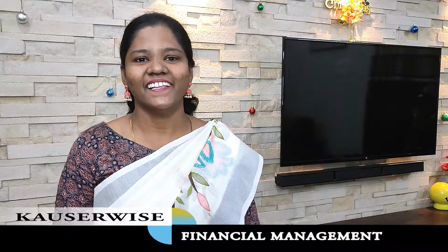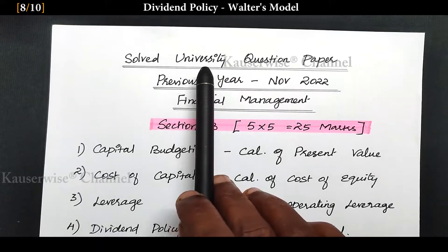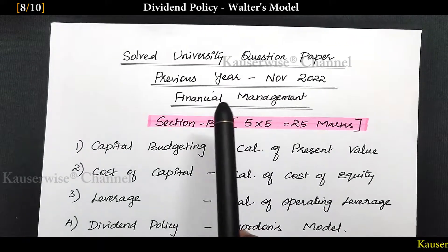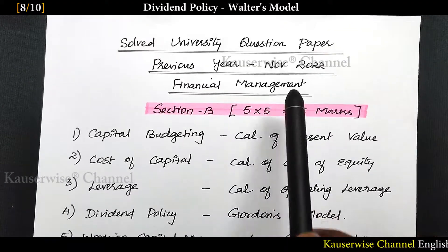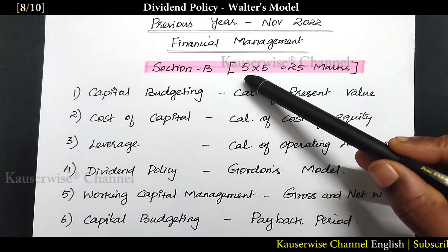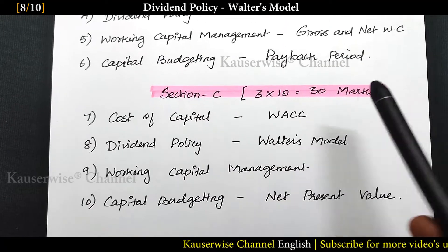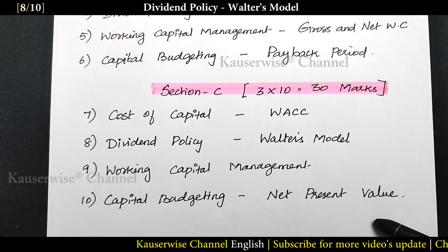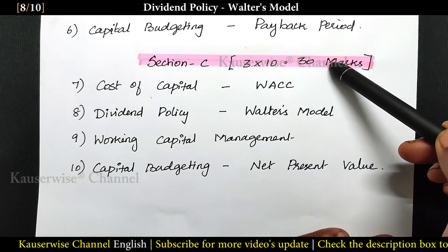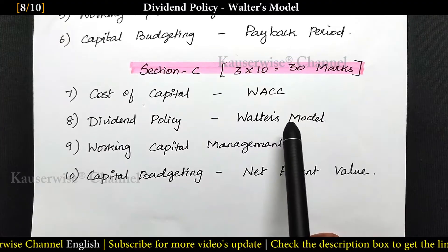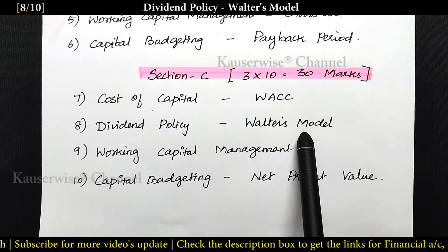Hi, welcome to my channel. This is Kouser Weiss and this is the continuation video of solving previous year university question paper that is November 2022 financial management. In that we are solving section B 5 mark questions and section C 10 mark questions. You can find the playlist link in the description box. In this video, we are going to solve section C 10 mark question second one, that is Walter's model under dividend policy. Now let's see the question.